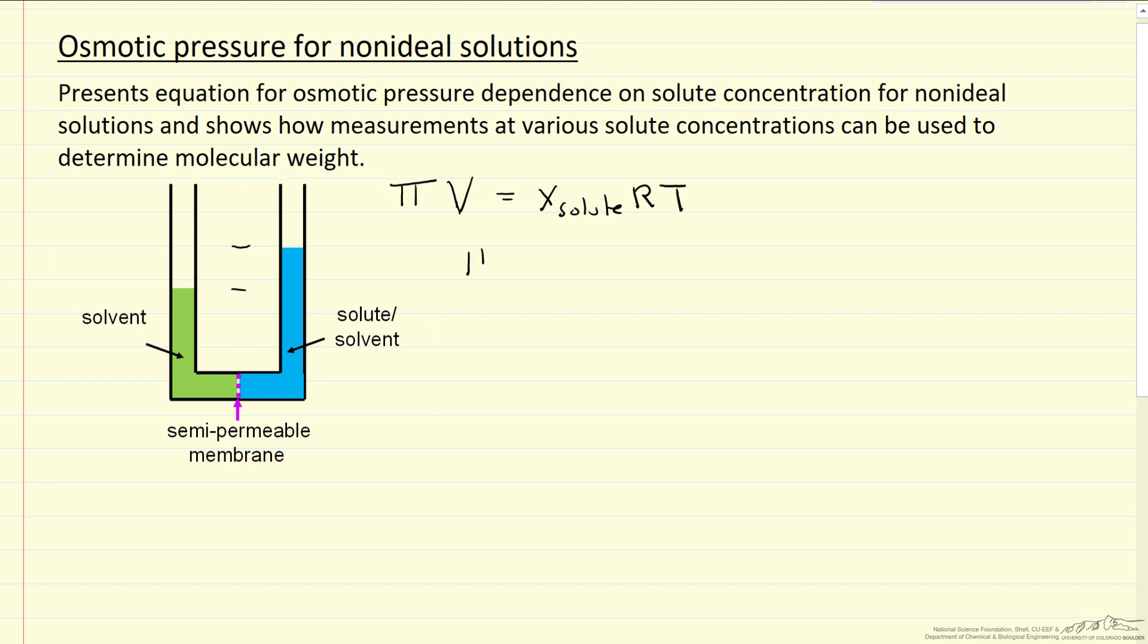Now we can rearrange this equation so the osmotic pressure is equal to, now the mole fraction I'm going to write it as the moles of solute over total moles, but the reality is the total moles is essentially the same as the moles of solvent because we're using really low mole fraction, so that's a very good approximation, RT, and of course this molar volume is in the denominator.